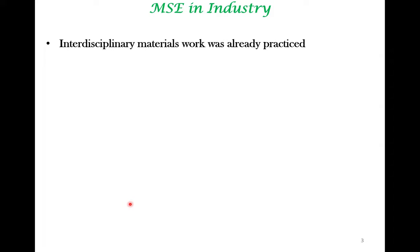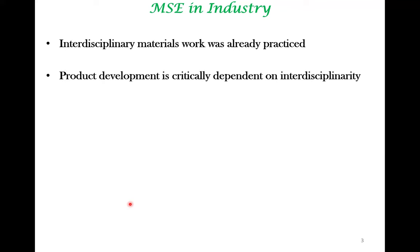He also traces material science and engineering in industry. Interestingly, the interdisciplinary nature of material science was practiced in industry well before it took shape in university settings. If you think about product development — even for a chemical product like battery development or fuel cell development — you may think it is done by chemical engineers or chemists, but battery management systems and fuel supply components also require process control, mechanical engineering, and aspects of electrical engineering. So product development has always been interdisciplinary.